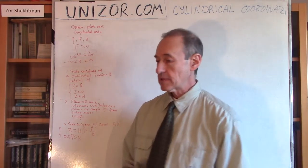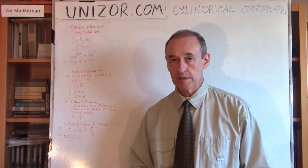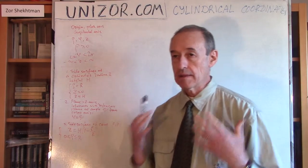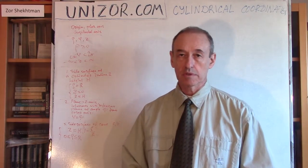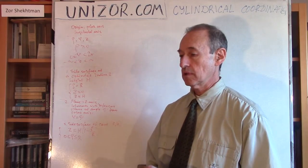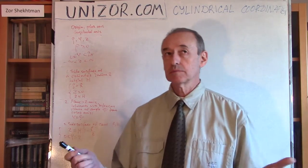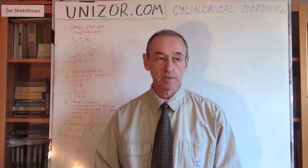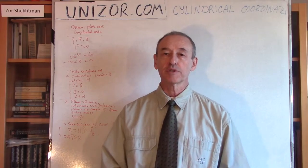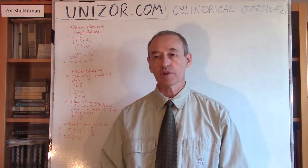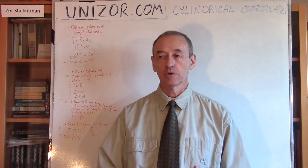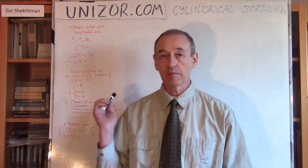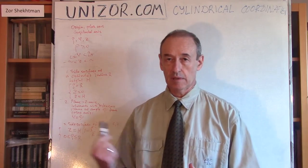The previous lecture was dedicated to Cartesian coordinates in the three-dimensional space. Today I will talk about another system of coordinates called cylindrical. Why do they actually invent different coordinate systems? It's because certain properties of certain geometrical objects are easier to express in different coordinate systems. I will make a couple of examples at the end of this lecture.